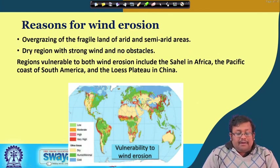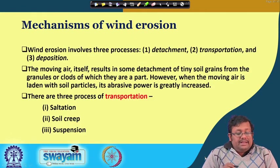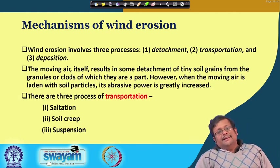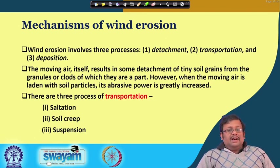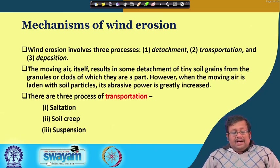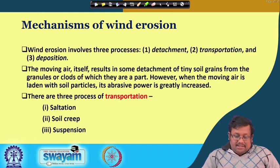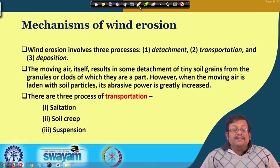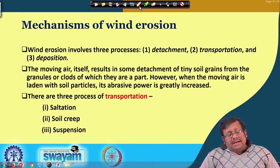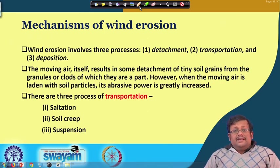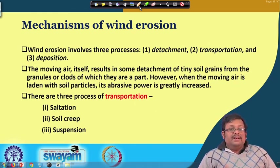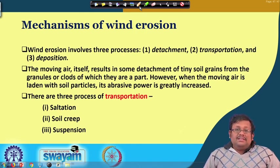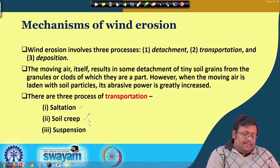Wind erosion involves three basic processes, similar to water erosion: detachment, transportation, and deposition. Moving air itself causes detachment of tiny soil grains from granules or clods, and when the moving air is laden with soil particles, its abrasive power is greatly increased. Transportation is mediated through three processes: saltation, soil creep, and suspension.